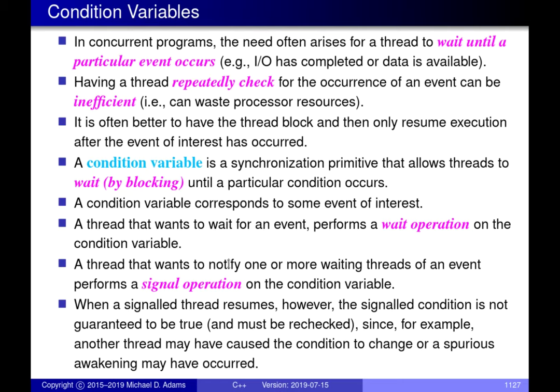Condition variables come into play in concurrent code when threads are doing I/O — for example, reading data from a network connection. Because the processor is much faster than a network connection, it takes time before data is available. We could have the thread sitting there asking 'is the data ready yet?' billions of times, but this is inefficient — we'd be consuming a CPU core just to run code that basically does nothing, constantly asking when the network connection is very slow.